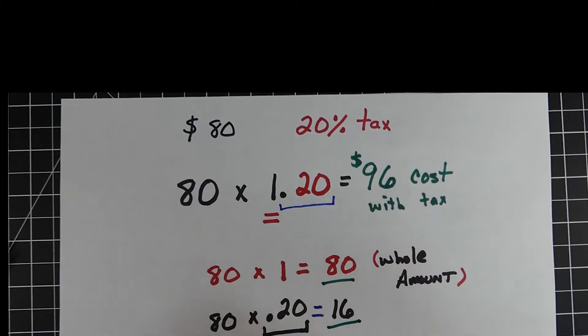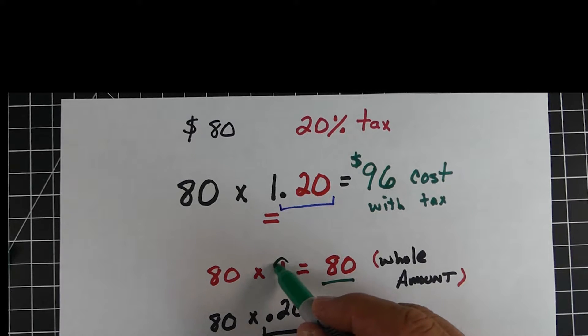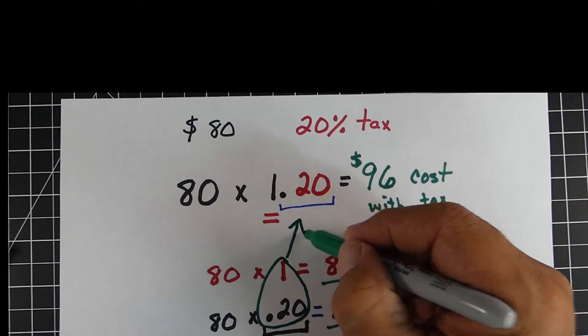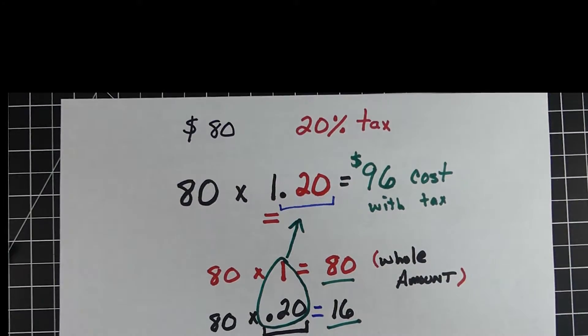So what we can do is if we just combine the 2, the 1 and the .2, that's going to equal that 1.2. So basically we're just taking the whole amount plus the percent of tax and putting it together.